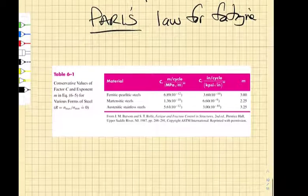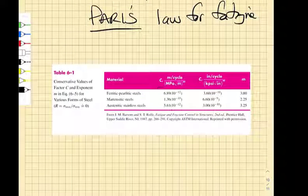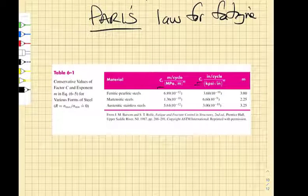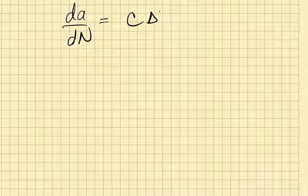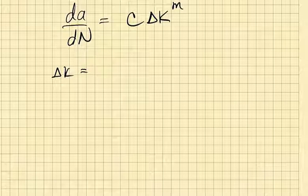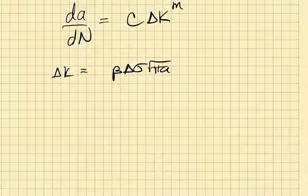So there are some conservative values of these fitting parameters that you can find in the book. We have this idea of dA, dN is equal to C delta K to the M. We know that delta K is going to be equal to beta delta sigma root pi A.